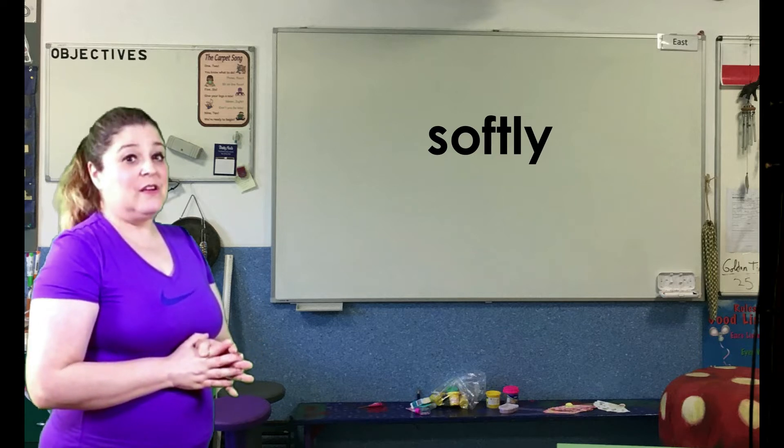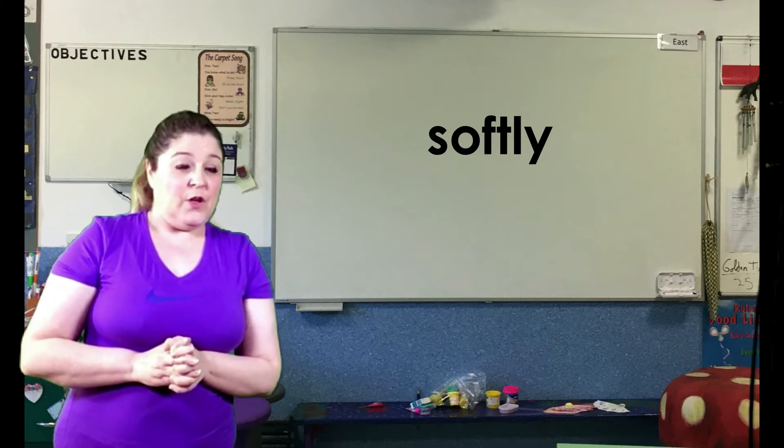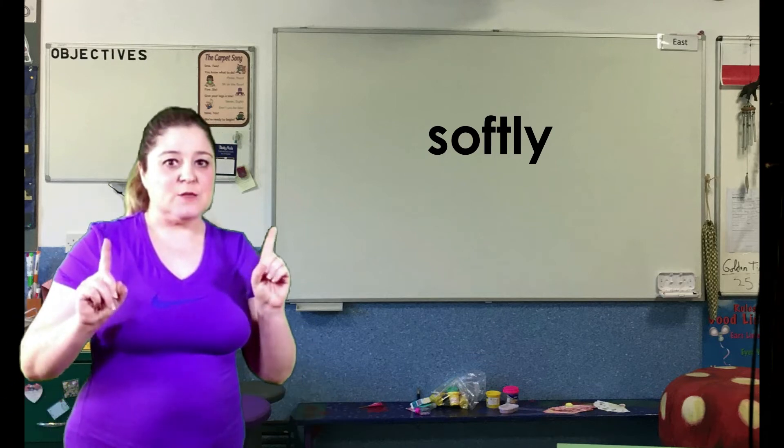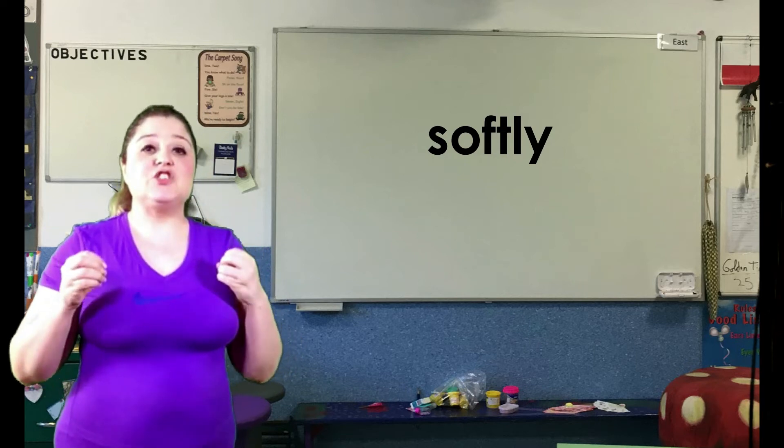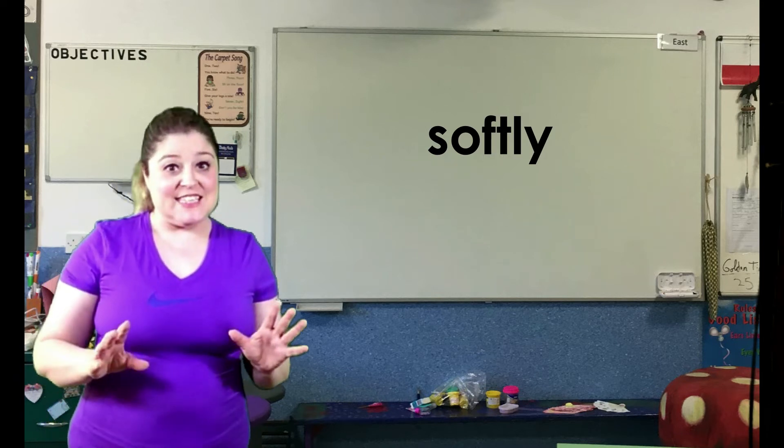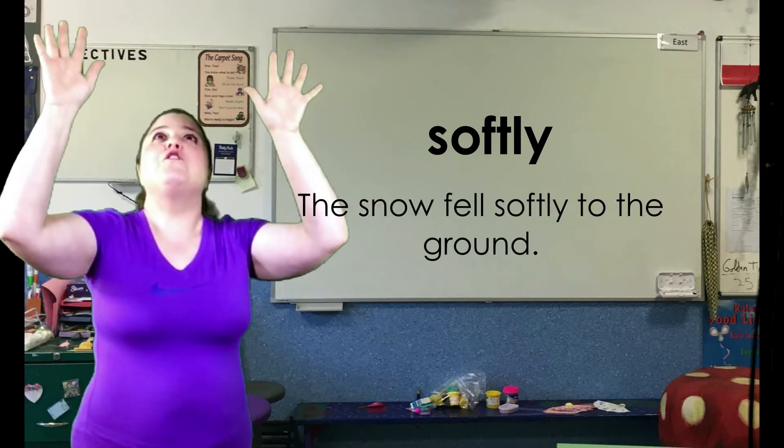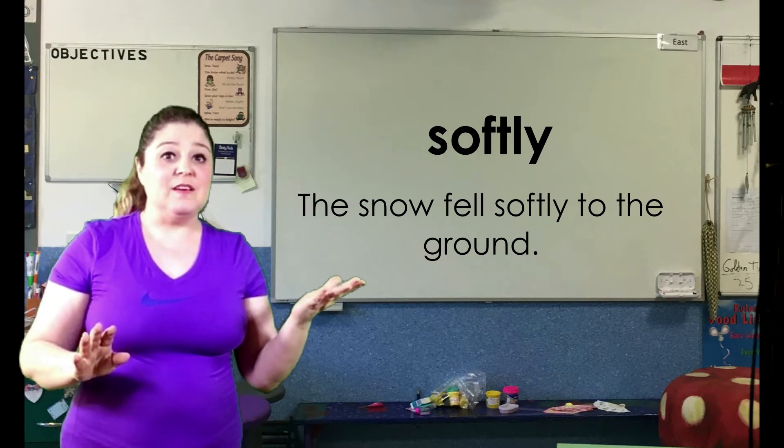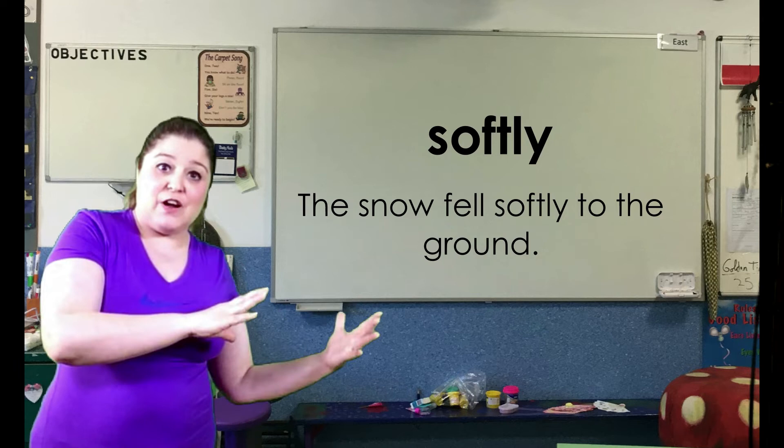Remember, the word SOFTLY cannot describe a noun. You cannot say, the pillow was SOFTLY. That doesn't make any sense. SOFTLY is an adverb. It needs to describe a verb. So, you could write a sentence like, the snow fell SOFTLY to the ground. How did the snow fall? It fell SOFTLY. SOFTLY is describing the verb FELL.